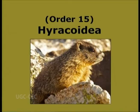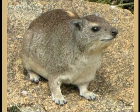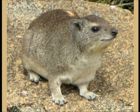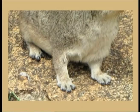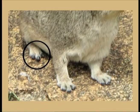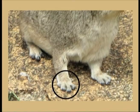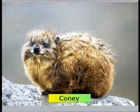Order 15: Hyracoidea. Hyrax meaning shrew, eidos meaning form. They are small guinea pig-like mammals distantly related to elephants. Snout, ears and legs are short. Four toes are present on the front foot and three on the hind foot, each with a flattened hoof-like nail. Incisors are one or two; no canines are present. Cheek teeth are lophodont. Conies from South Africa are its example.